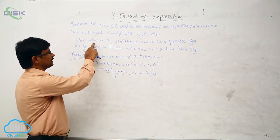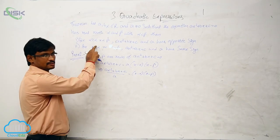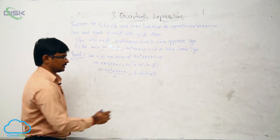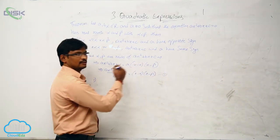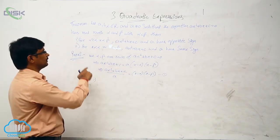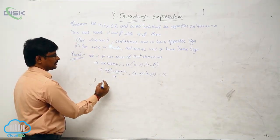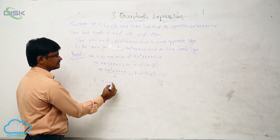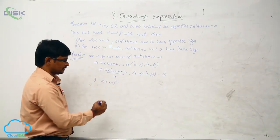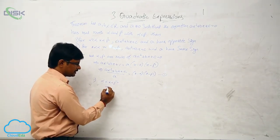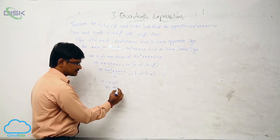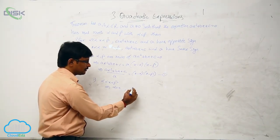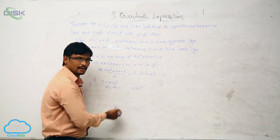Now we have to prove two parts. I am considering the first one — I take this as equation number one. What is the first condition? Alpha less than x less than beta. From this, we can write alpha less than x, and also x less than beta.